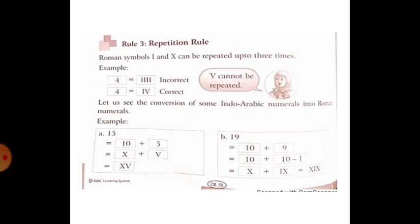The third rule is the Repetition Rule: Roman symbols I and X — that is, 1 and 10 — can be repeated up to 3 times. For example, writing four I's (IIII) is incorrect in Roman Numerals. The correct way to write 4 is IV.